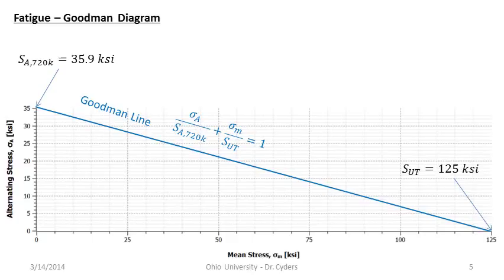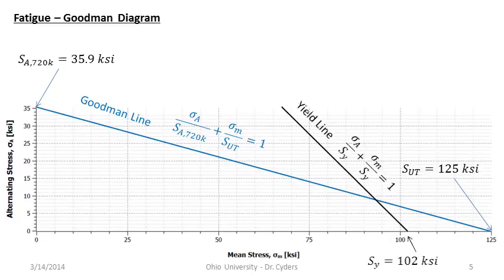That's the Goodman line. Now, we also want to avoid yielding because we don't want plastic deformation — we want dimensions to stay the same and the part to come apart and go back together the same way. So let's draw the yield line, which goes from the yield point on the mean stress axis up 45 degrees to the yield point on the alternating stress axis.